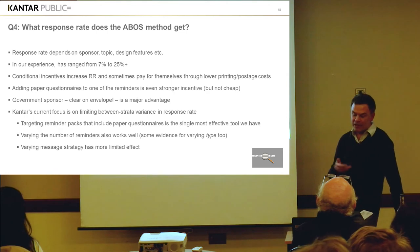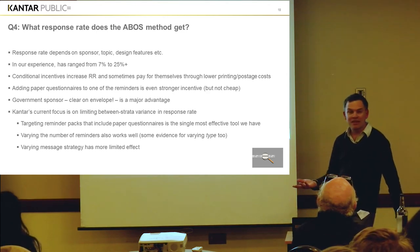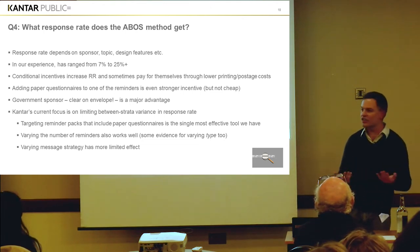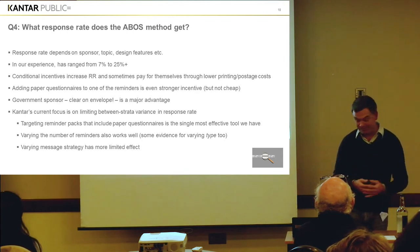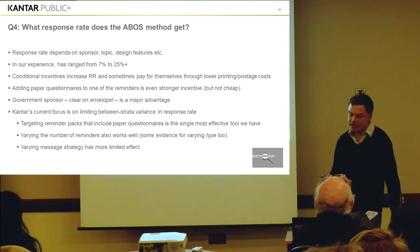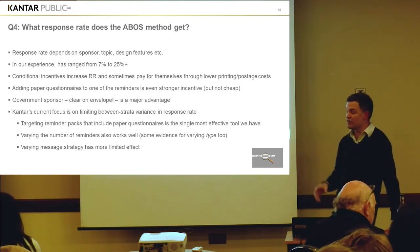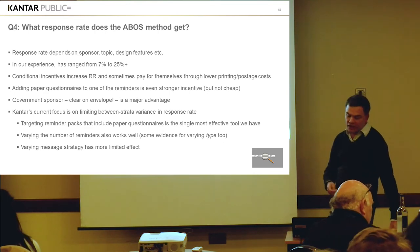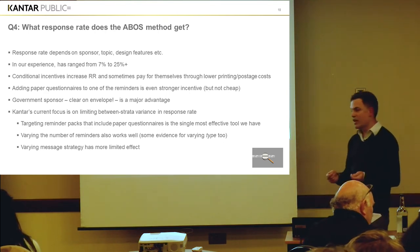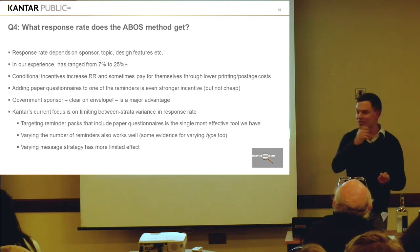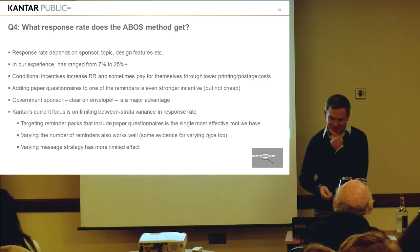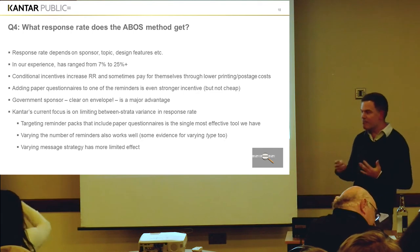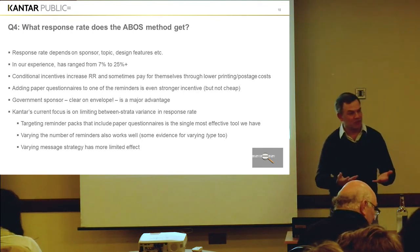Our current focus is on trying to limit variance in response rates between strata, because the response rate is never going to be very high. But the next best thing you can do is make sure it's pretty even across different strata, so you're hoping that the correlation between response probability and the things you're measuring won't be that strong. That's why we target reminder packs that include paper questionnaires in particular types of addresses — generally the more deprived areas tend to get this. We also vary the number of reminders, which is a good tool. There's some evidence for varying the type of reminder, but I've recently been burned by postcards that did absolutely nothing at all. Letters seem to be more effective than postcards. We've also tried varying the messaging strategy between waves, but we haven't really detected any effect — mainly because people don't really read very much and just look for the incentive amount and the passcodes.